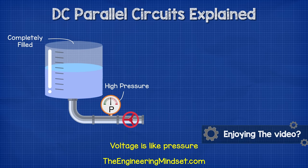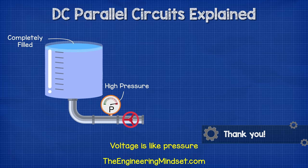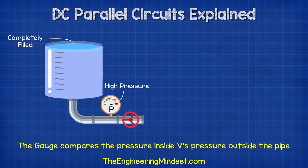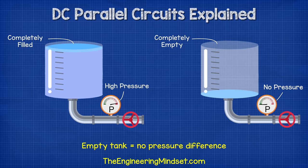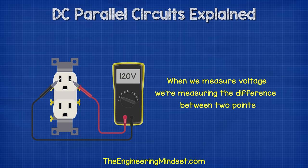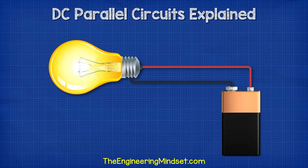Because we can only measure the difference in voltage between two different points. Voltage is like pressure in a water pipe. If you fill up the tank, then the water pressure is high, and we can read the pressure with a pressure gauge. The gauge is comparing two points in order to know what the difference in pressure is — the pressure inside the pipe compared to the pressure outside the pipe. When the tank is empty, there is no pressure difference, because the pressure inside the pipe is now equal to the pressure outside the pipe, so we get a reading of zero. The same with voltage: we can only measure the difference in voltage between two different points. When we connect a component to a battery, it experiences the difference in voltage between the two terminals of the battery, and that voltage or pressure will force electrons to flow through the component.